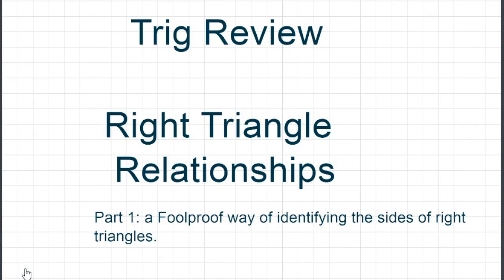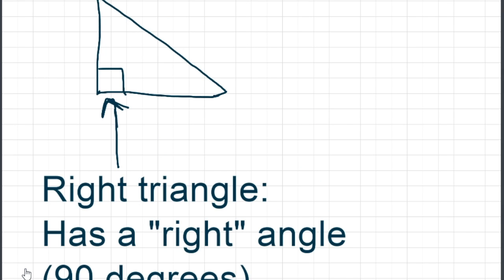Hello, today we're going to look at right triangle relationships and I'm going to show you a foolproof way of identifying the sides of right triangles. First of all, let's see what a right triangle is and review. A right triangle is one that has a right angle, that is, one that has a 90 degree angle in it.